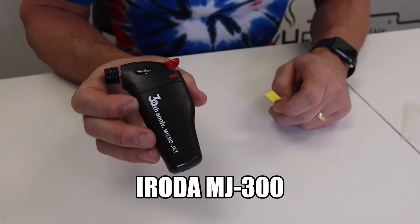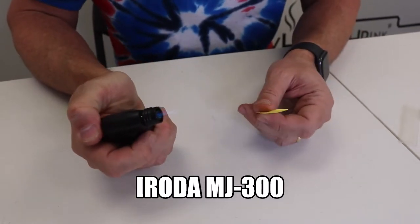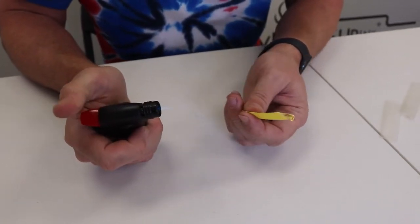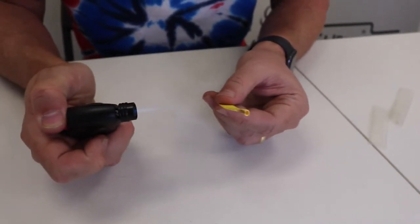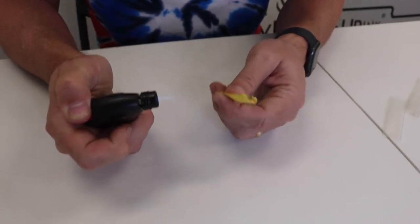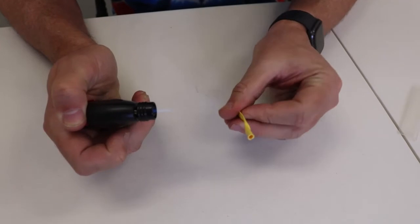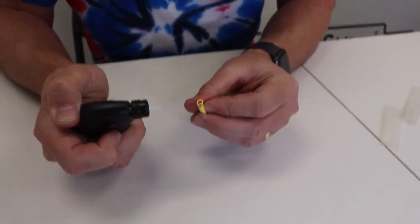This is our Eroda Microjet. This actually has a flame on it, so you really want to be careful when you're shrinking the tubing that you don't get too close. You can see I got it close. It could be just like a cigarette lighter also. You just want to be really careful and not get too close. I purposely used yellow tubing just so you can see that it is actually charring a little bit even this far away. You can see it's actually charring and burning the tubing.